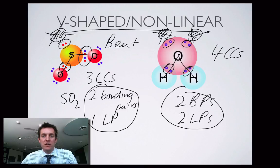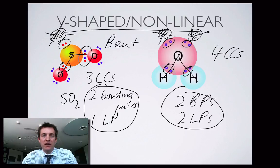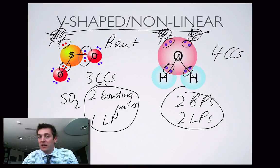The last two films — Examples of Shapes one and two — deal with drawing electron dot diagrams and building them up so you can actually determine the shapes. Those are the ones to watch next before looking at all the different types of intermolecular force and why they arise. If you want to understand that material, it's absolutely crucial that you have the ability to predict shapes of molecules.